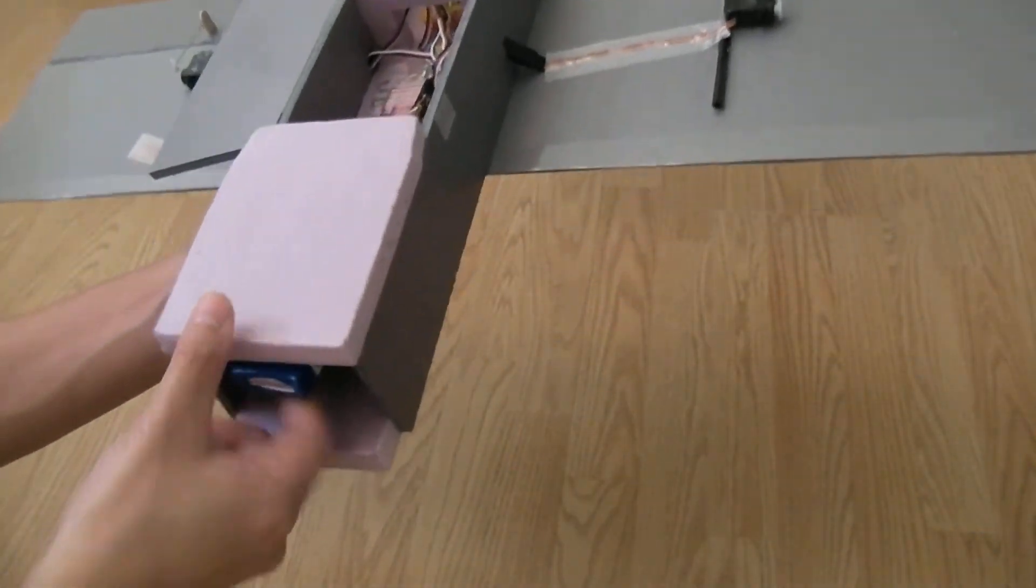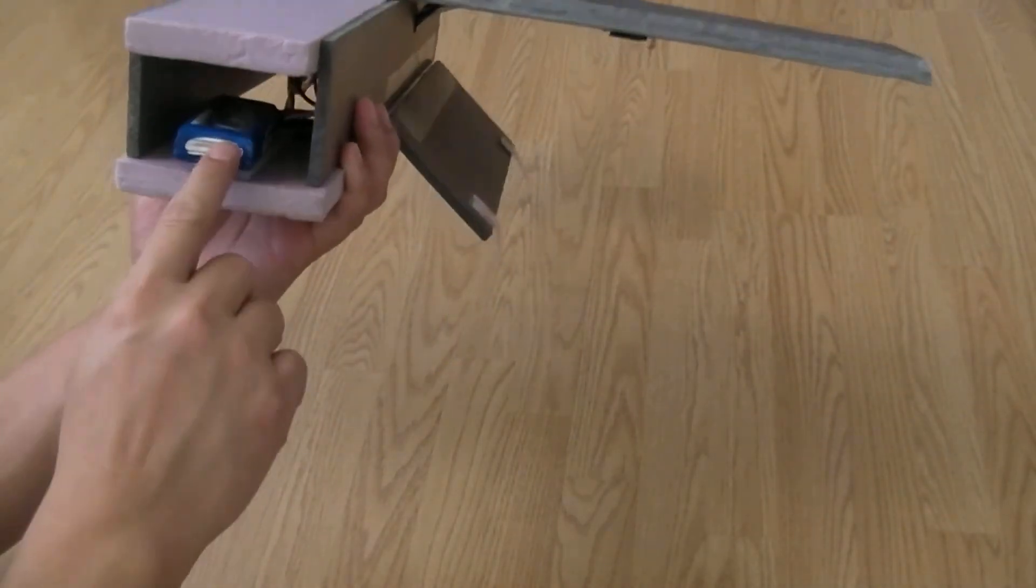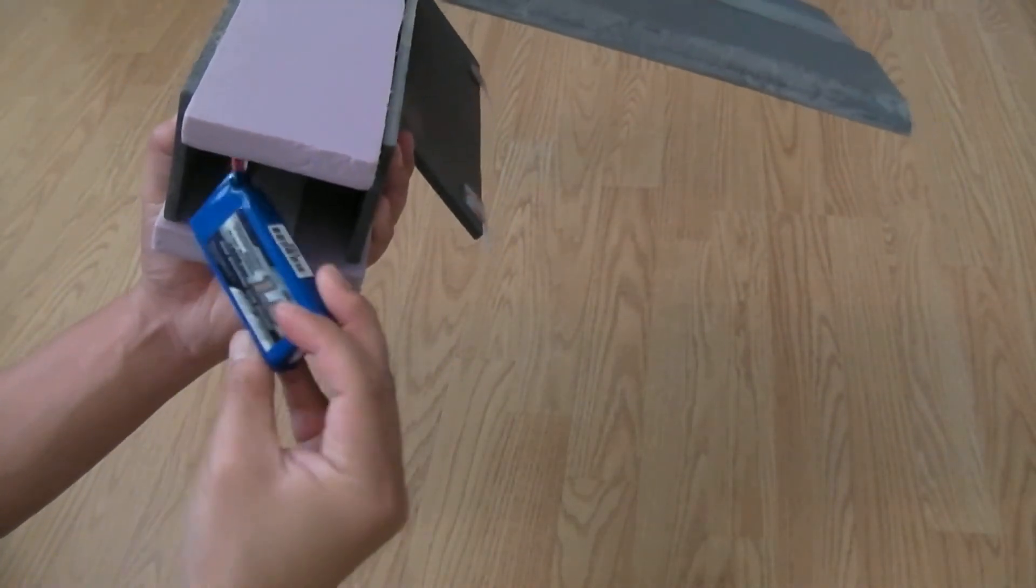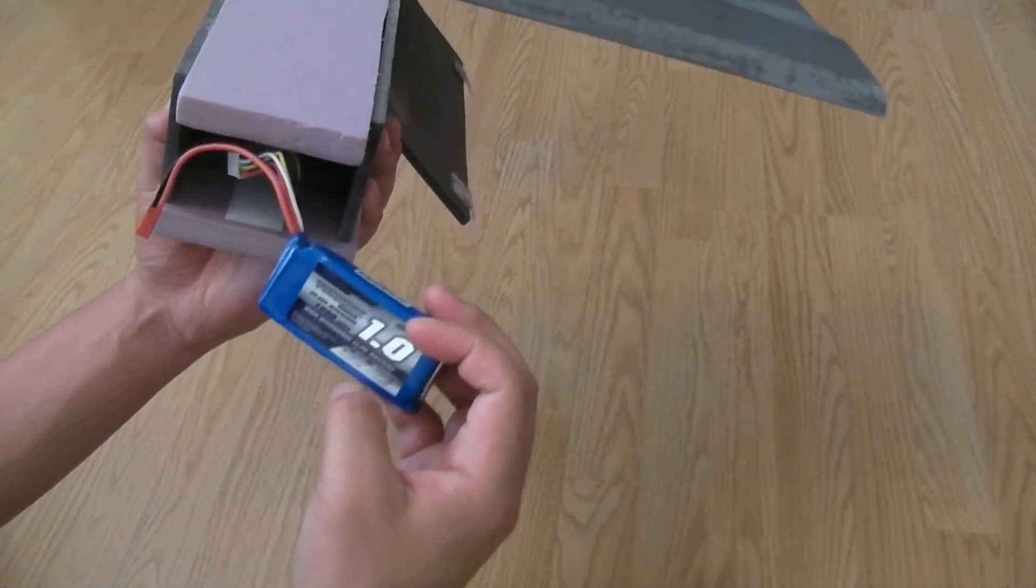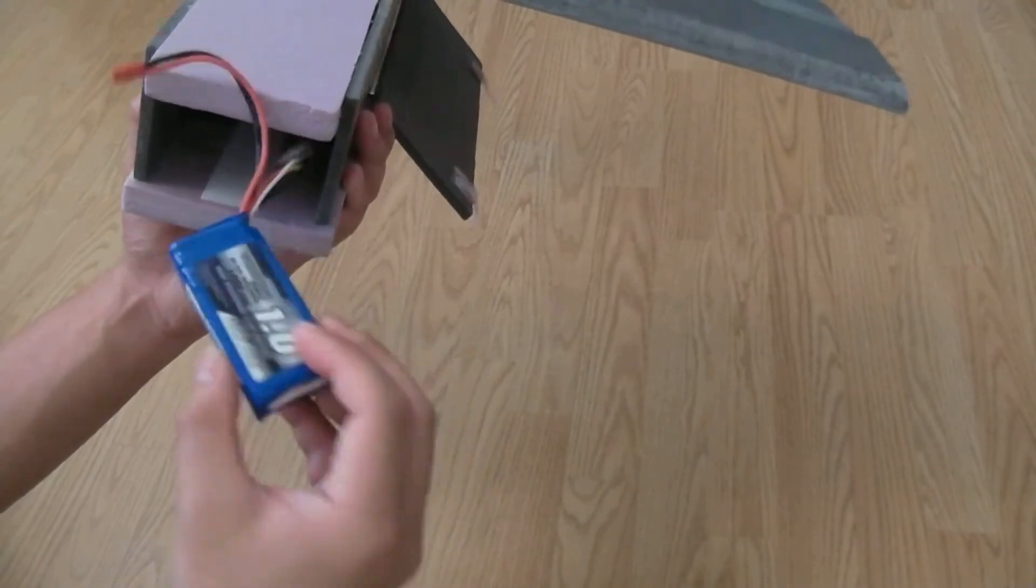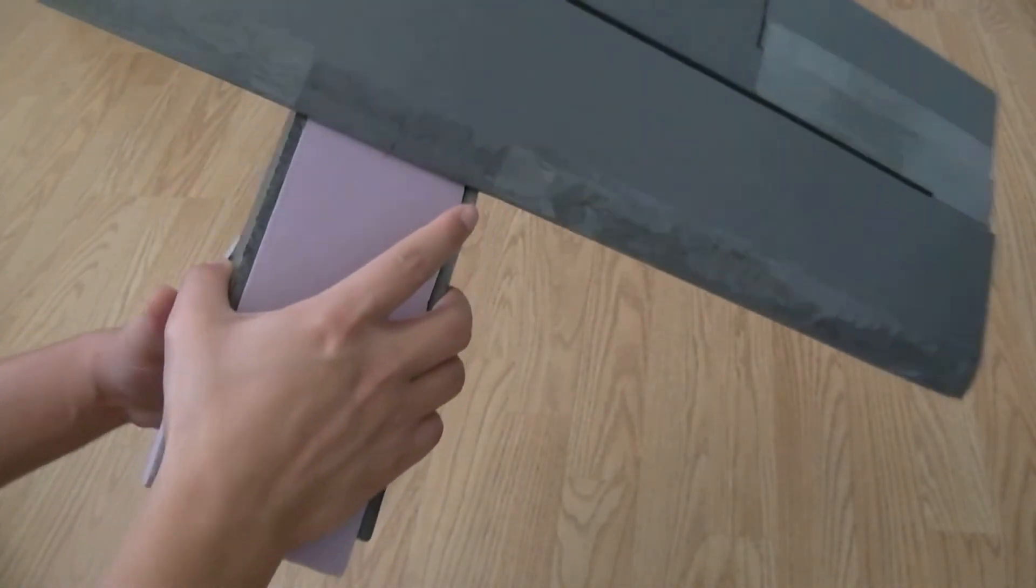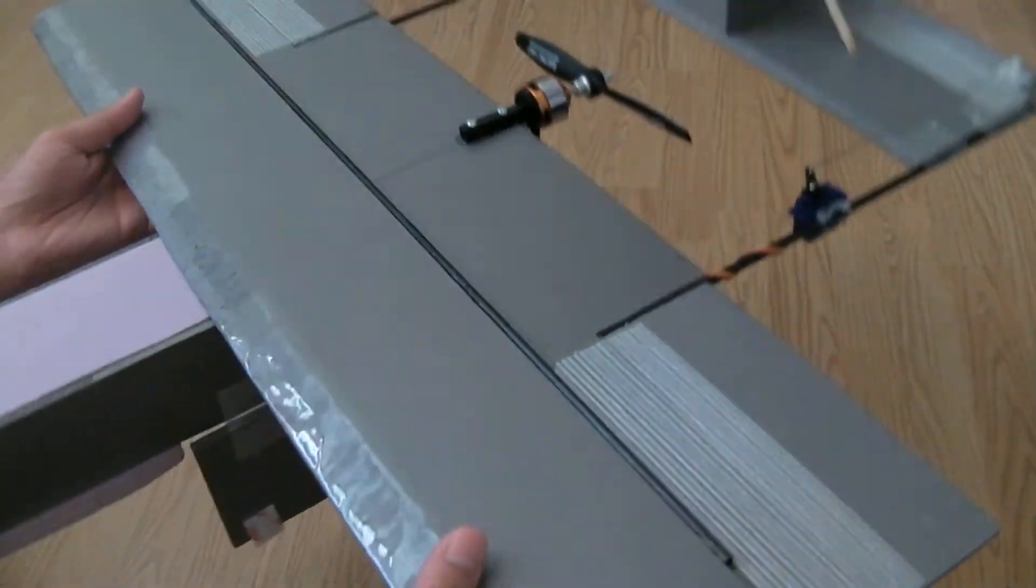And I put the battery in the front, like this, using a battery. This is a 1000mAh battery, 3 cell. And I put it like this, and the CG is about right here.